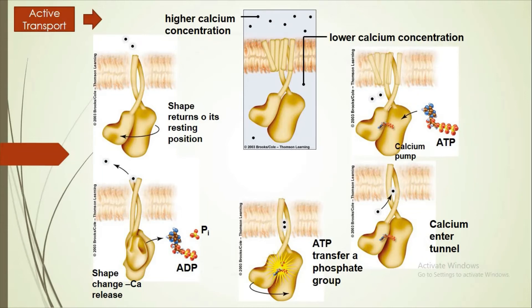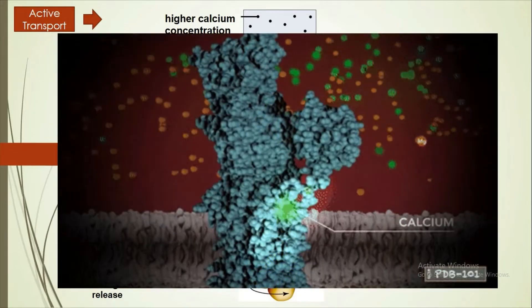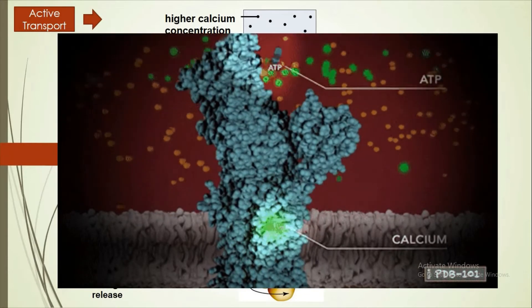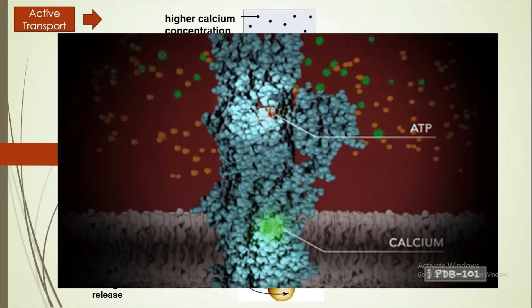This will allow the calcium to be shuttled outside the cell because the protein has changed its shape to allow the shuttle of calcium from low concentration to high concentration. So this is the animation for the calcium protein pump.